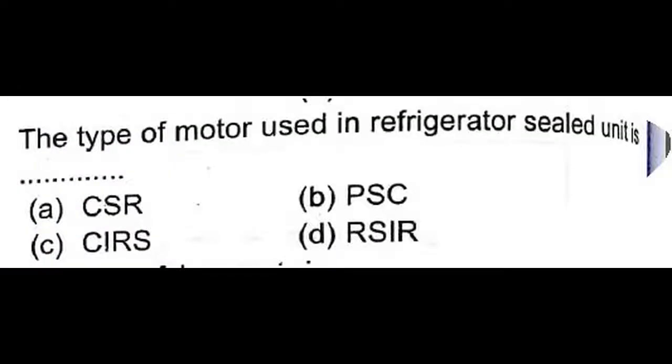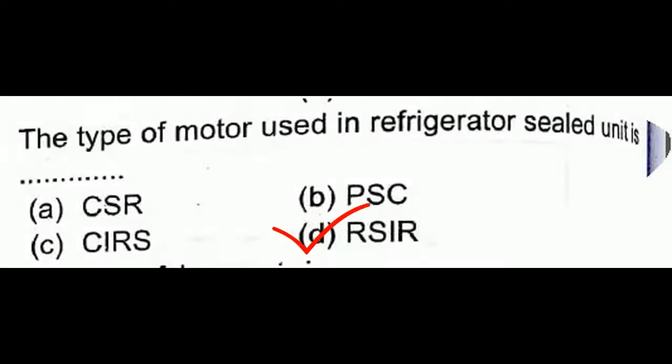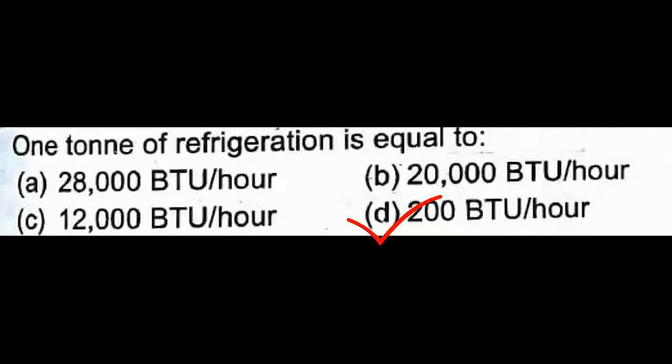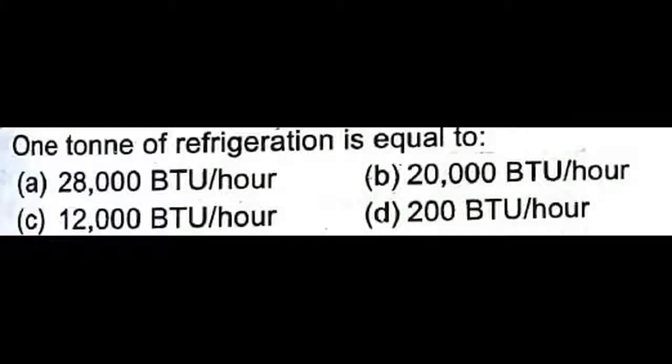One ton of refrigeration is equal to 50 kilocalories per minute — this is the actual practical value. The type of motor used in a refrigerated sealed unit is the RSIR type — option D is correct. The tri-square is used to check an angle of 90 degrees — option D is correct.